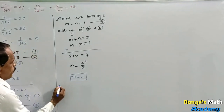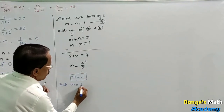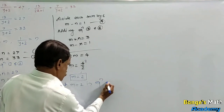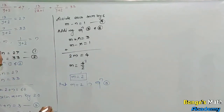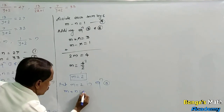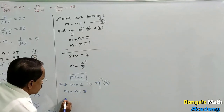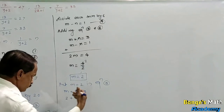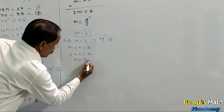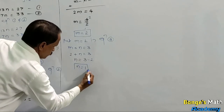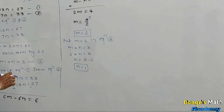Put m equal to 2 in equation 3: m plus n equal to 3 gives 2 plus n equal to 3. Transfer 2 to RHS: n equals 3 minus 2, so n equal to 1.